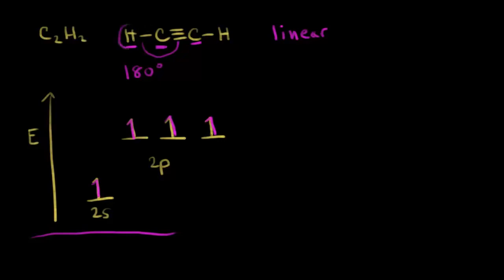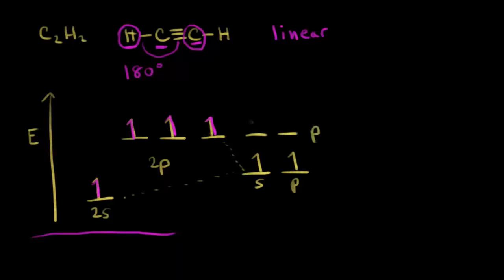We're looking for two hybrid orbitals since carbon is bonded to two atoms. We're going to take an s orbital and promote it in terms of energy, and demote one p orbital — only one p orbital this time. We have an s orbital with one electron and a p orbital with one electron. That's going to leave behind two p orbitals, each with one electron. This is sp hybridization because our new hybrid orbitals came from one s orbital and one p orbital.